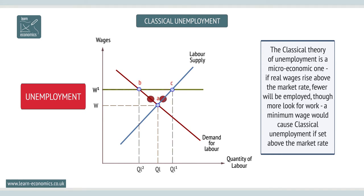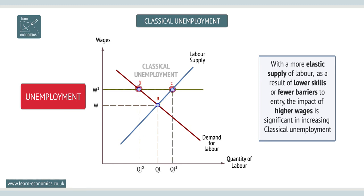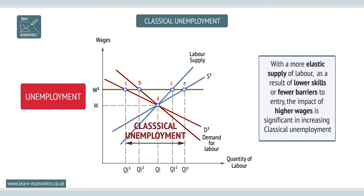A minimum wage would cause classical unemployment if set above the market rate. The extent of classical unemployment depends on the elasticity of demand and supply of labour. With a more elastic supply of labour, as a result of lower skills or fewer barriers to entry, the impact of higher wages is significant in increasing classical unemployment.